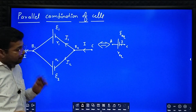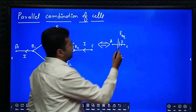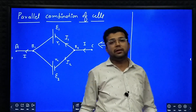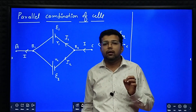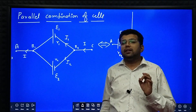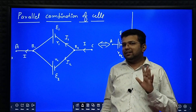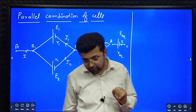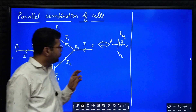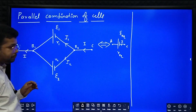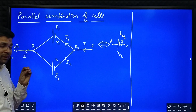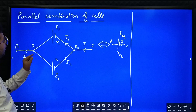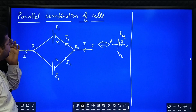In parallel combination, the potential difference is the same. So we need to write equations for I, I1 and I2.